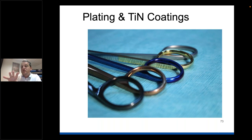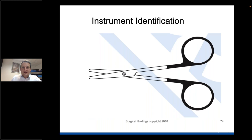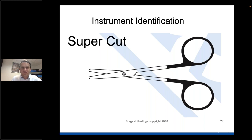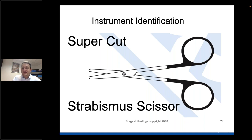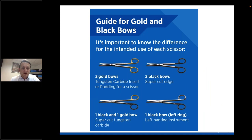Some blue surgical instruments will be titanium and are okay to be dyed blue, but generally you'll see gold and black coatings. On scissors, two black bows designate a supercut strabismus scissor. These black bows use a different chemical process - not as robust as titanium nitride, so you may get scratches, as they're there only for identification. Two gold bows on needle holders generally means there's a tungsten carbide insert - the same coding can appear on scissors. One black, one gold means supercut tungsten carbide.